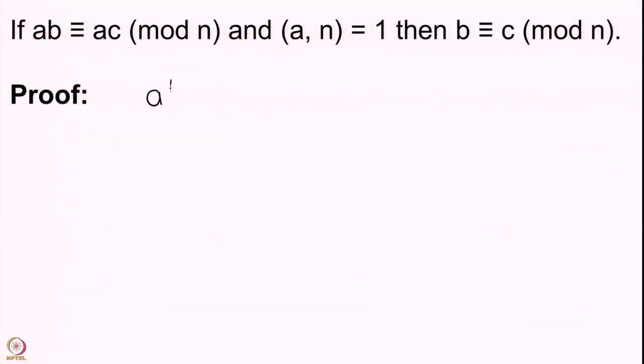Of course, the next question will be how many numbers are coprime to n — can you give some formula for numbers coprime to n? We will deal with these questions later. But let us now try to prove this statement: if ab is congruent to ac modulo n and a is coprime to n, then b is congruent to c mod n. Let us write down all the things which are given to us.